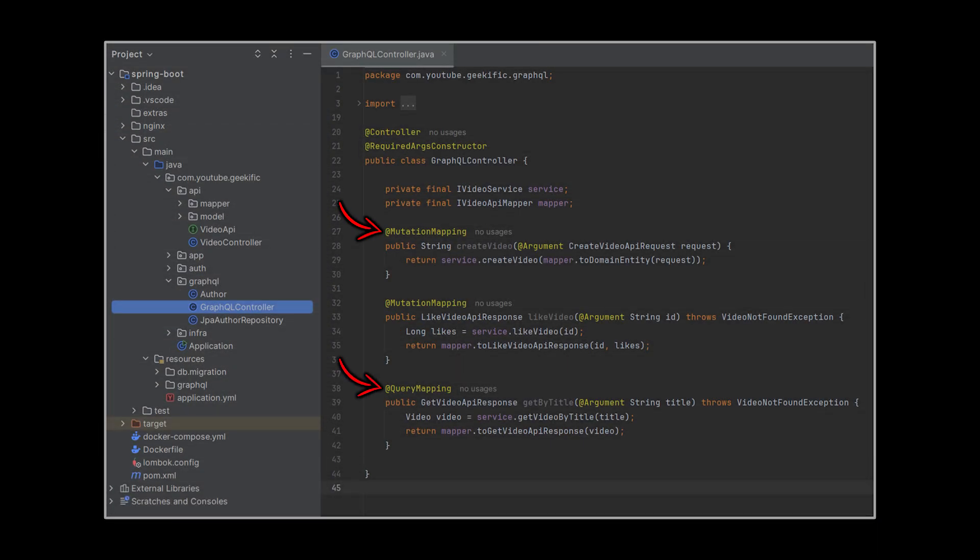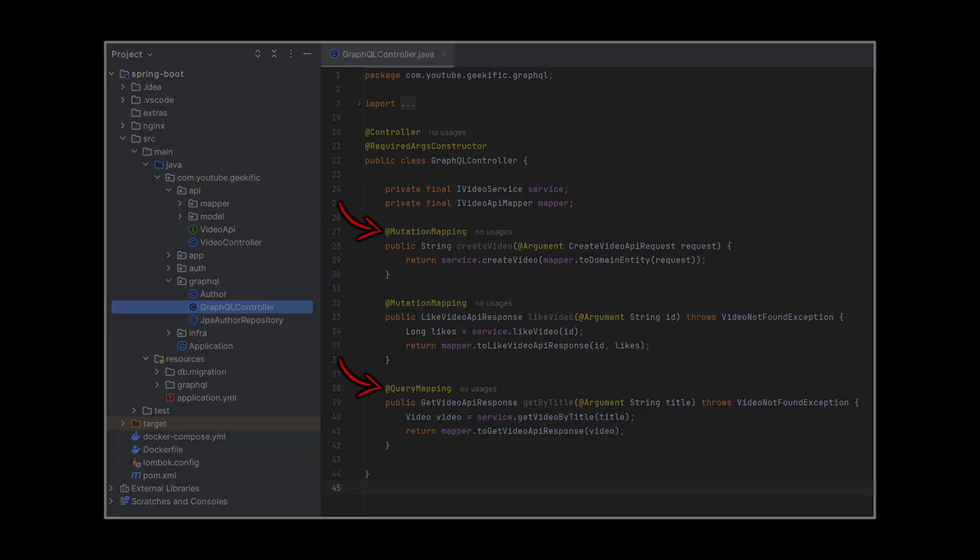In this class we will copy paste the previous controller we wrote, and instead of using the @GetMapping, @PutMapping, and @PostMapping annotations, we will use the @QueryMapping and @MutationMapping annotations.